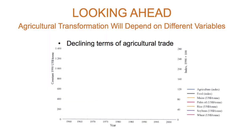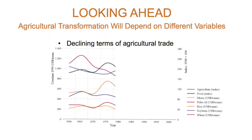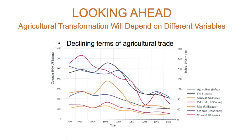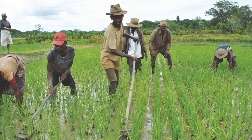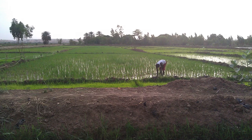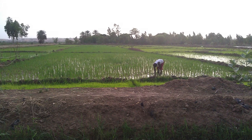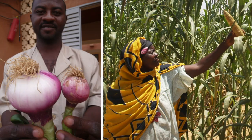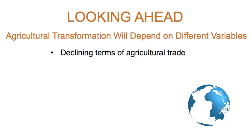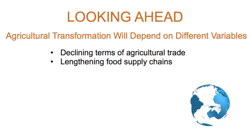So why can't we do that? Today's transformations will be different, for several reasons. First, the declining agricultural terms of trade. Real food prices are going to be about a quarter to a half of what they were at the outset of the Green Revolution, which means the same productivity increase on the farm now generates about a third of the impact on gross farm revenues that it did at the beginning of the Green Revolution.